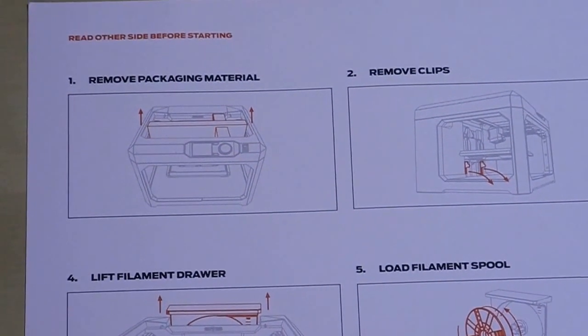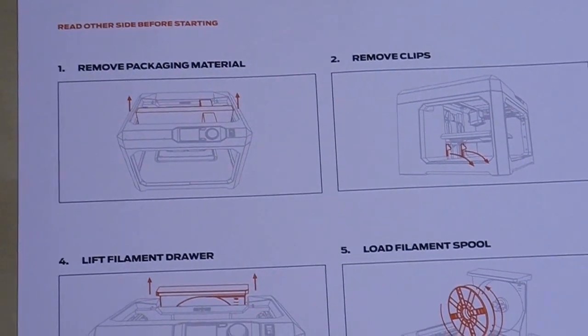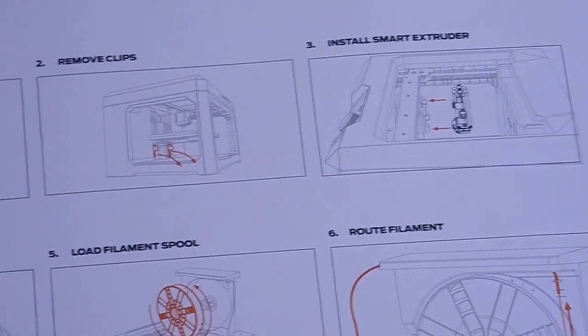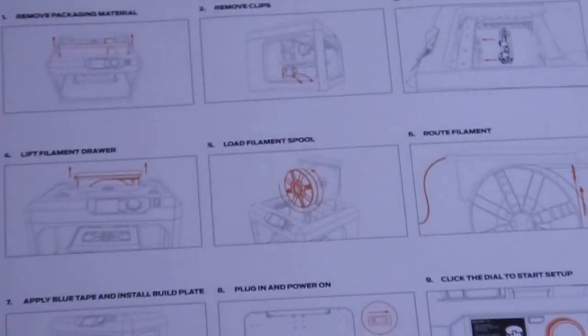So this is the back of the checklist of the stuff that's included, and this is actually the unpacking instructions. It says read the other side before starting. Download the user manual - I did that. How to call support, install MakerBot desktop - did that. Let's get you printing.